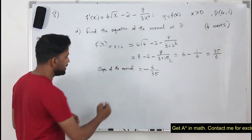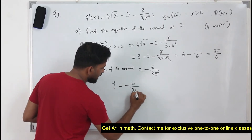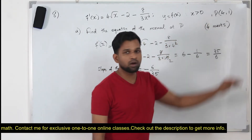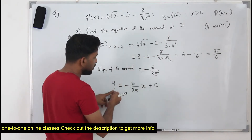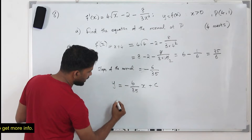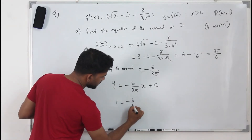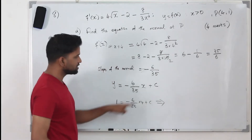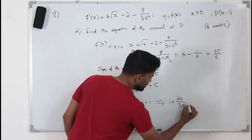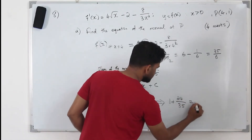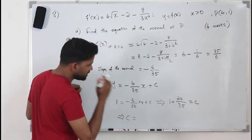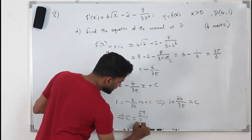You've got the slope of the normal. The equation of the normal is y equals mx plus c. Now you need to find c — use the point P(4, 1). Replace x by 4 and y by 1: 1 equals negative 6 over 35 times 4 plus c. Because x is 4, 6 times 4 is 24, bringing it across gives 1 plus 24 over 35 equals c.